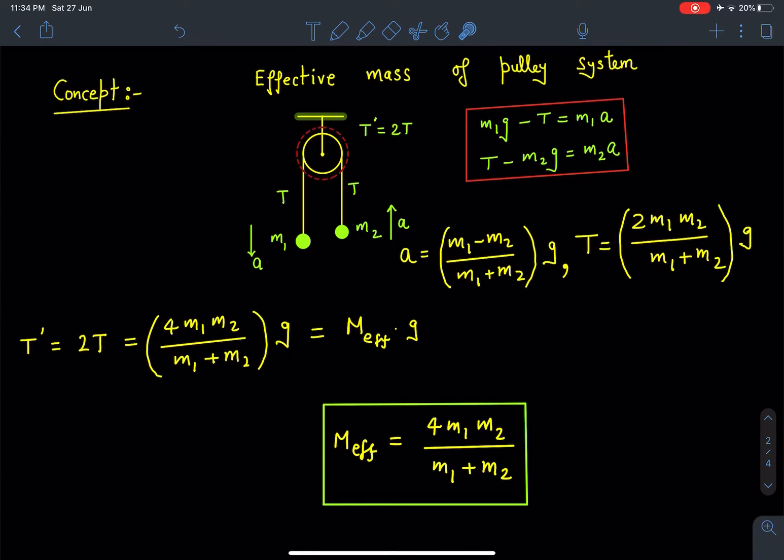From here on solving, we will get m_effective = (4m1·m2)/(m1 + m2), which is double of the tension in the string. The entire system we can replace whenever we see such a pulley system with the overall mass of (4m1·m2)/(m1 + m2).